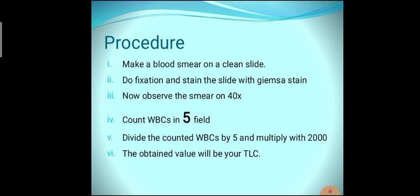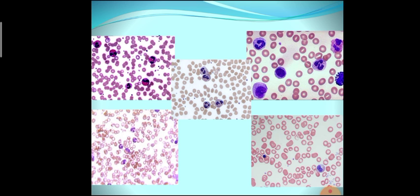After counting WBCs in five different fields, divide the counted WBCs by five and multiply by 2,000. For example, suppose we counted 25 WBCs in five fields. We divide 25 by 5 to get 5 WBCs per high power field. Then we multiply 5 by 2,000 to get 10,000. So 10,000 is our TLC. This is the simple method of counting TLC from a blood smear.